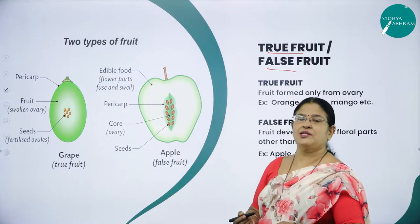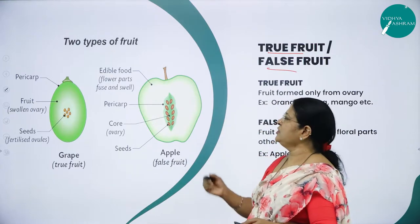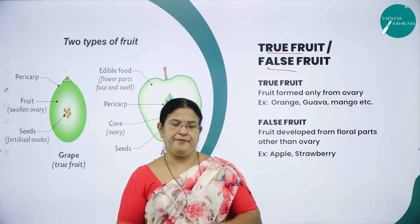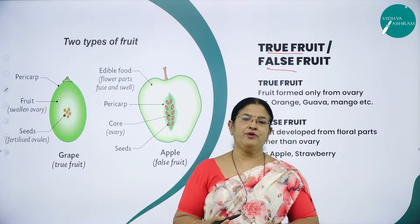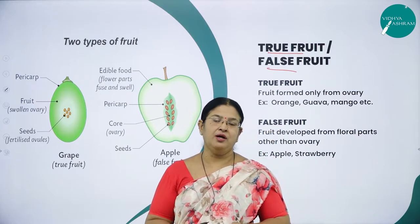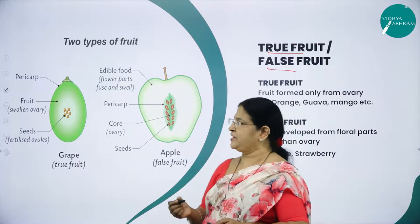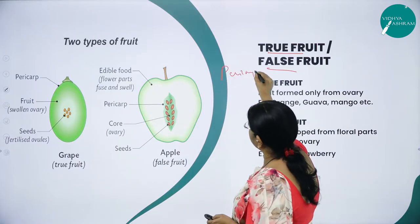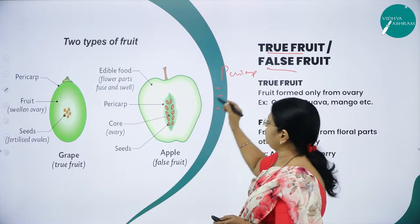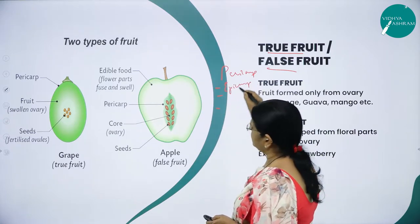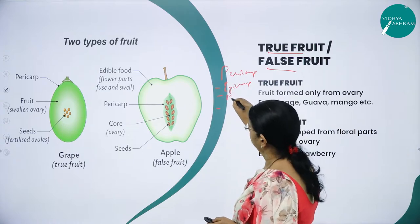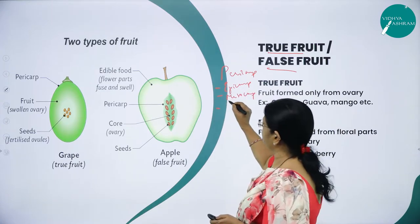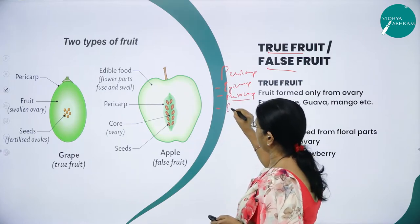Moving on to the concept of fruit: a fruit is nothing but a ripened ovary, and the ovary wall forms the fruit wall called pericarp. The pericarp is divided into three layers: the outer layer called epicarp, the middle layer called mesocarp, and the inner layer called endocarp.